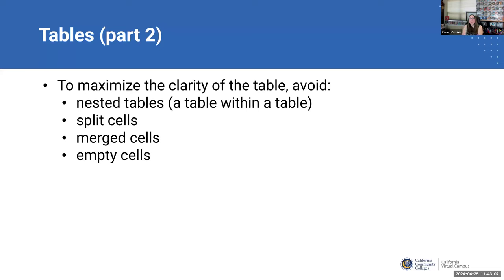To maximize the clarity of a table, a couple of things to avoid: first, a table within a table — called a nested table — is an accessibility nightmare, please avoid. Another thing is splitting a cell, which can be very confusing to a screen reader. You can also merge cells, which is confusing to a screen reader, as is having empty cells with nothing in them. So avoid nested tables, split cells, merged cells, and empty cells. You want your table to be as straightforward as possible and primarily used for data.